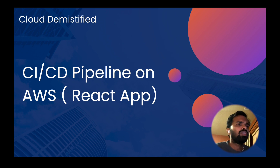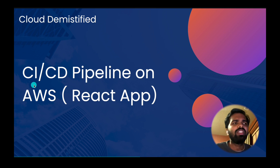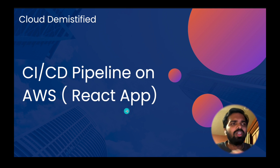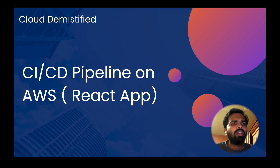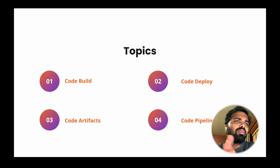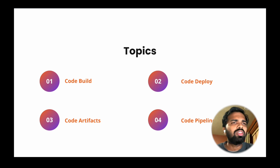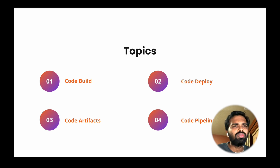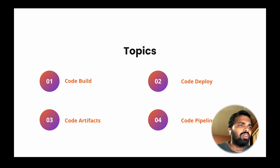Hello everyone, welcome to my YouTube channel. In this video we will be talking about how to build a CI/CD pipeline on AWS, and for demonstrating this I will be deploying a React application on AWS. There will be mainly four services: AWS CodeBuild, CodeDeploy, CodeArtifacts, and CodePipeline. These are the major offerings from AWS which help us build a CI/CD pipeline.